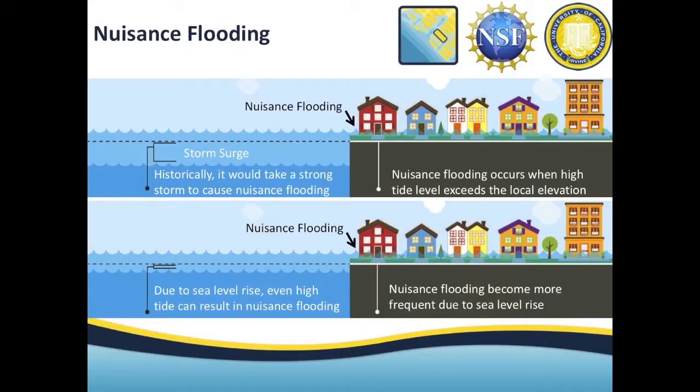What is the connection to sea level rise? In the top panel, imagine sea levels were lower — say 50 or 60 years ago. You needed a major storm, a big surge, or a combination of surge and high tide to exceed the local threshold for nuisance flooding. Now sea levels are higher, so there is less freeboard left. You don't necessarily need a major storm or surge to get coastal flooding — even high tide can cause local flooding. This is the connection to sea level rise, and as sea level rise continues, we will have more and more nuisance flooding.